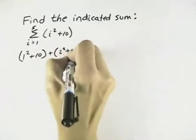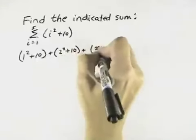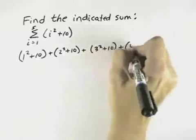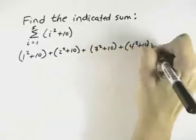When i equals 2, we have 2 squared plus 10. When i equals 3, we have 3 squared plus 10. When i equals 4, we have 4 squared plus 10. And finally, when i equals 5, we have 5 squared plus 10.